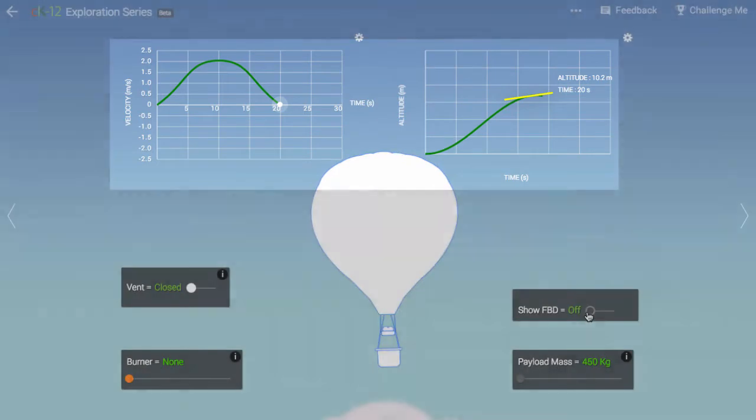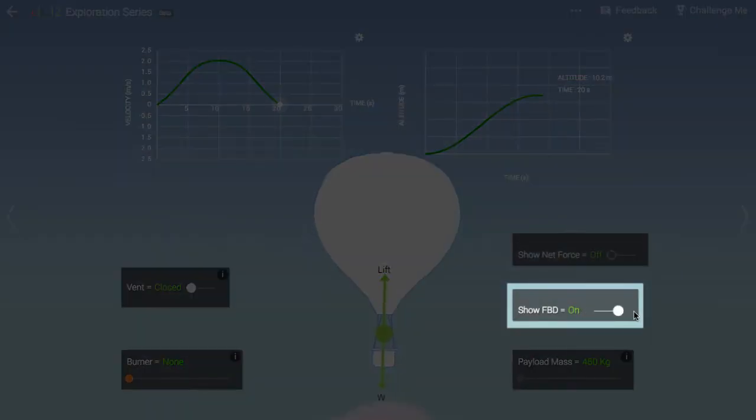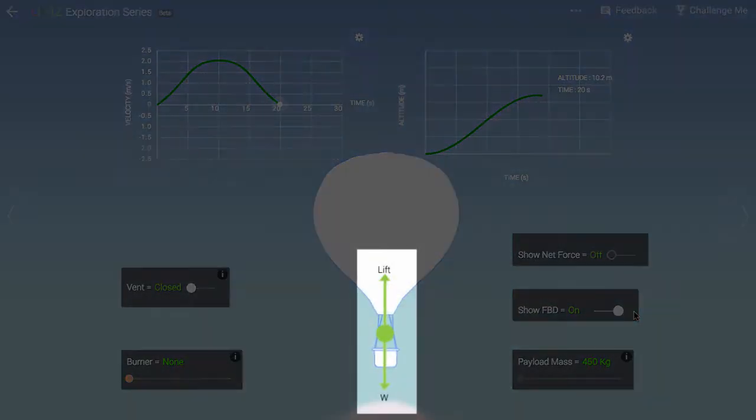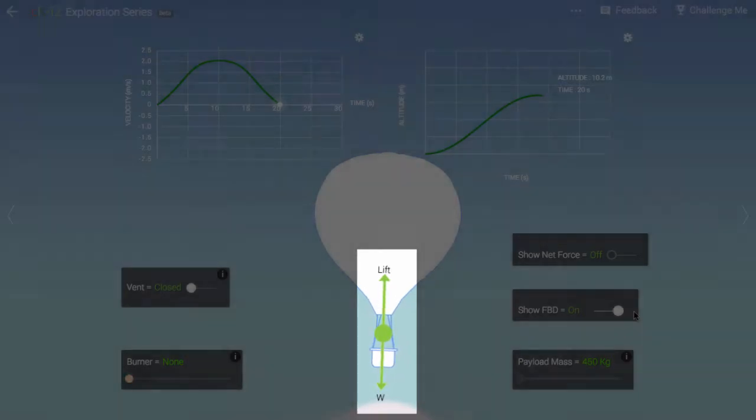Let's turn on the free body diagram for the balloon. Now we can see the forces acting on the balloon. An upward lift force is provided by the buoyancy of the hot air in the balloon. A downward gravitational force is provided by the weight of the balloon, the payload, and most importantly, the air in the balloon.